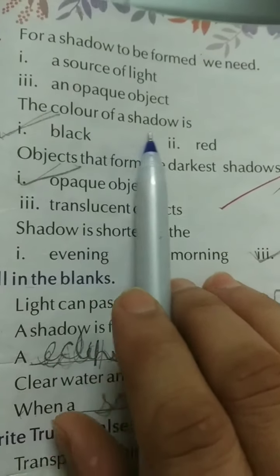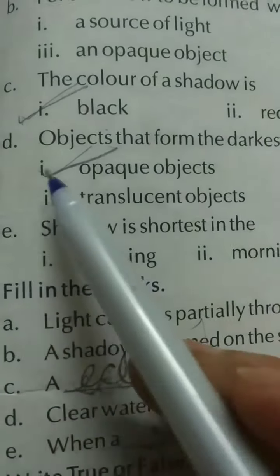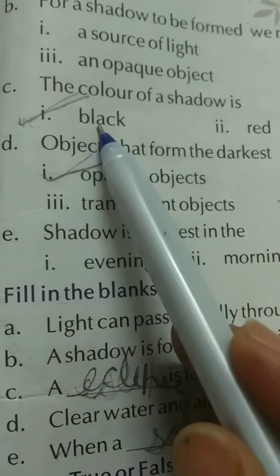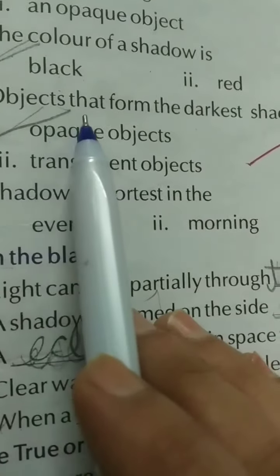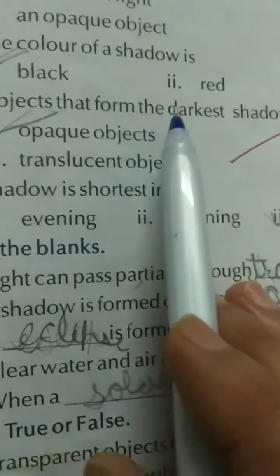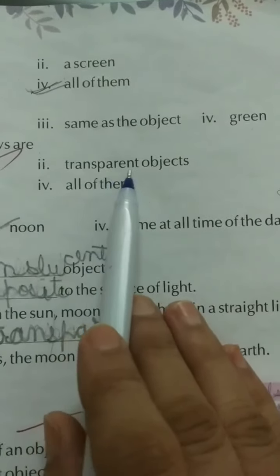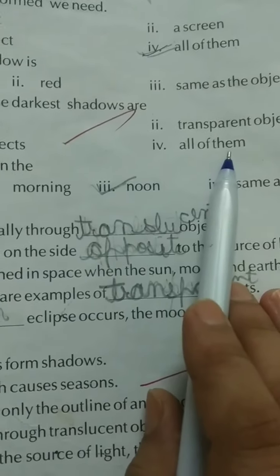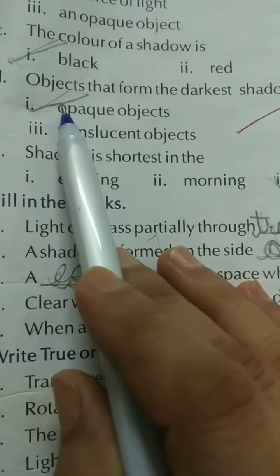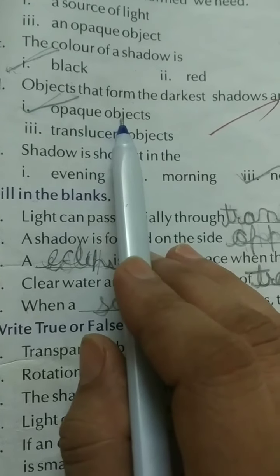Part C: The color of shadow is black, red, same as the object, green. Correct answer is black. We know shadow is black in color. Part D: Objects that form the darkest shadow are opaque object, transparent object, translucent object, all of them. Correct answer is opaque object.